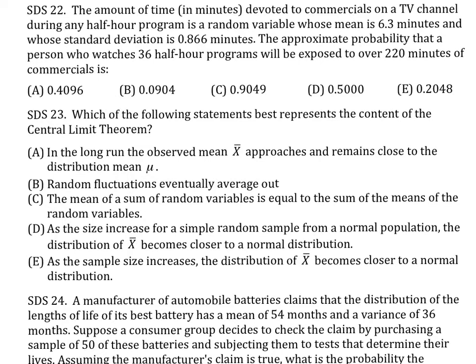To manage question 22, let's write down what we know. We know that x is distributed with a mean of 6.3 and a standard deviation of 0.866. What is x? x is the amount of time devoted to commercials on a TV channel during any half-hour program. So the amount of time is going to be 6.3 minutes on average in any half-hour program with a standard deviation of 0.866. Now we're going to take 36 half-hour programs, so that's our sample, and we're going to talk about x-bar.